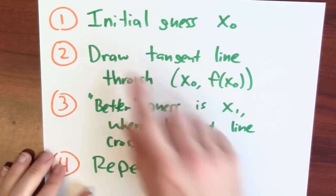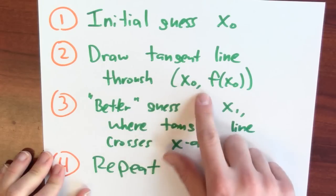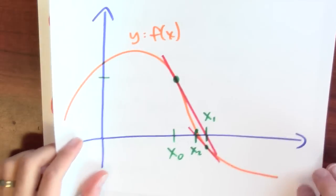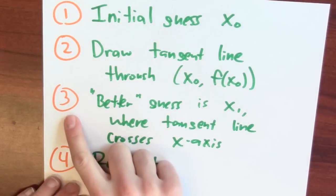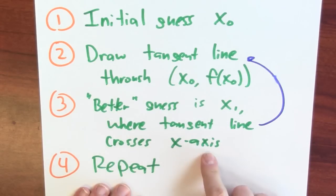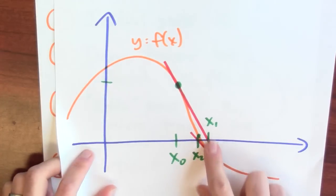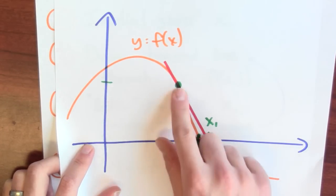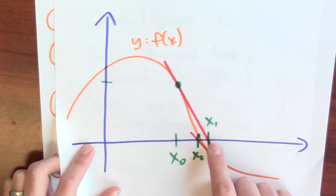So pictorially, that's what Newton's method tells us to do. Let's write down the steps. You start with some initial guess x0. The next step is to draw the tangent line through the point (x0, f(x0)) — exactly what I did here. Then figure out where that tangent line crosses the x-axis and use that as the new guess, x sub 1, which I hope will be better. My original guess was pretty far away from 0, but x1 — where the tangent line crosses the x-axis — is hopefully a better guess, and in this example it is.